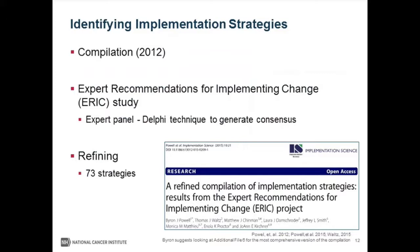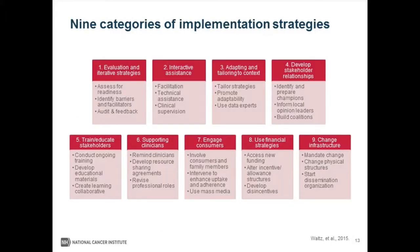Thus was born the ERIC study — Expert Recommendations for Implementation Change. They gathered a panel of 71 experts in the implementation science and practice field and conducted two to three rounds of Delphi process, a structured communication technique, to generate a refined list of 73 discrete strategies in their article published in 2015. As part of the ERIC study, they also conducted a concept mapping exercise with 35 experts who sorted and rated each of the 73 discrete strategies, ultimately identifying nine distinct categories.